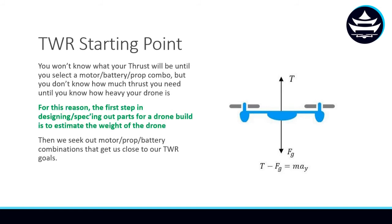Now we know a lot about the thrust-to-weight ratio, and it is actually a very good starting point for our design process. You won't know what your thrust is going to be until you select motor-battery-prop combinations. But you don't know how much thrust you need until you know how heavy your drone is. So, for that reason, the very first step in the design process is to estimate the drone's total weight so that we can get our weight of the drone, and we'll know how much thrust we'll need to get to our thrust-to-weight ratio goal. In the next video, we're going to show you how to estimate the drone's weight.